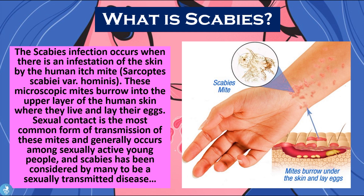the skin by the human itch mite called Sarcoptes scabiei variant hominis. These microscopic mites burrow into the upper layer of the human skin where they live and lay their eggs. Sexual contact is the most common form of transmission and generally occurs among sexually active young people, and therefore scabies has been considered by many to be a sexually transmitted disease.